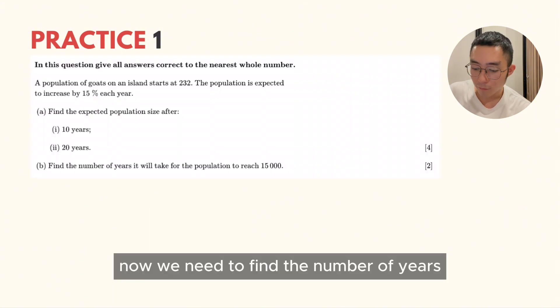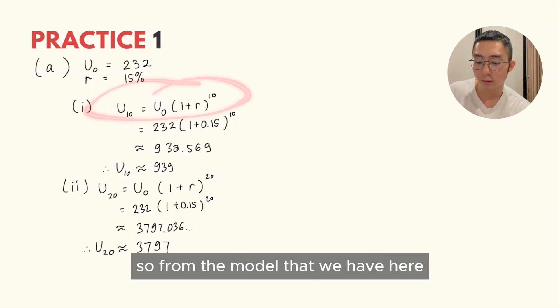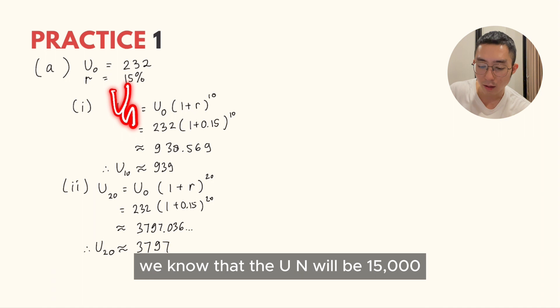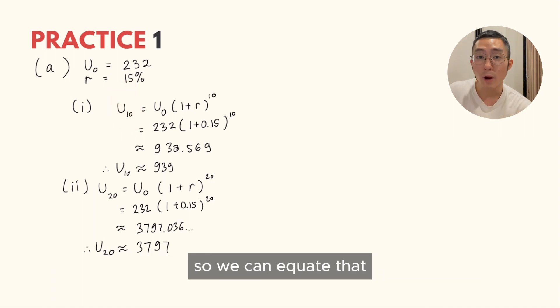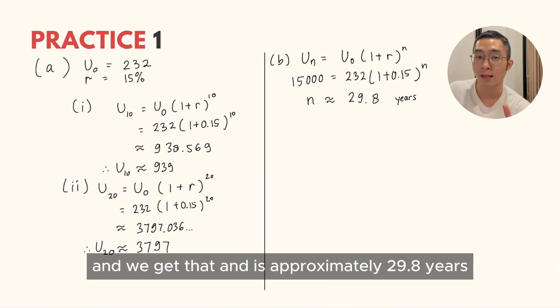We need to find the number of years when the population reached 15,000. From the model that we have here, we know that the UN will be 15,000, but we don't know the N. So we can equate that and use numeric solver to solve for that. And we get that N is approximately 29.8 years.